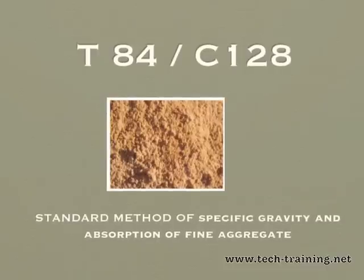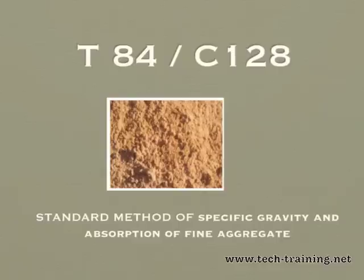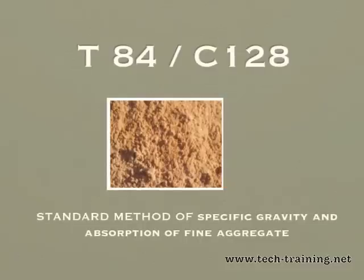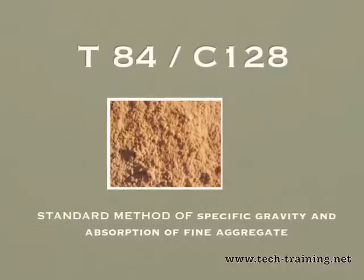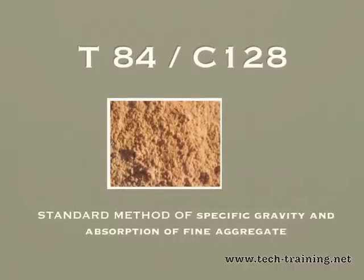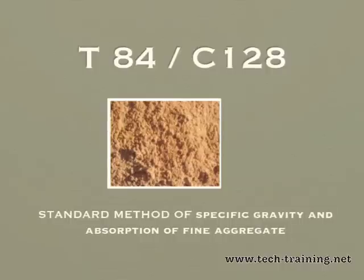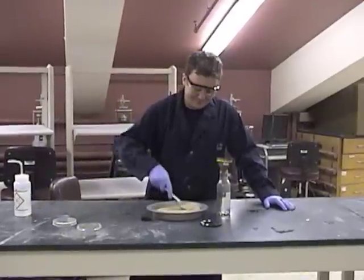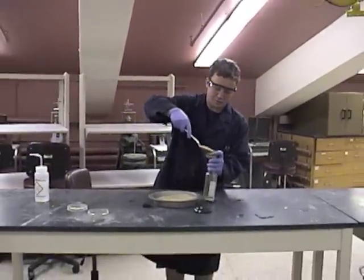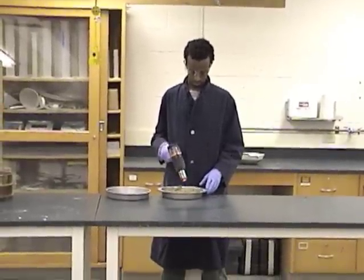AASHTO T84 and ASTM C128 are the standard methods of test for specific gravity and absorption of fine aggregate. The relative density or specific gravity test identifies the physical properties of the fine aggregate — a change in this number will increase or decrease the volume of fine aggregate in a given concrete mixture. Absorption is a measurement of water held in the concrete pores. When the pores are completely filled but there is no surface moisture, the sand is considered to be in the SSD condition. An increase in moisture or decrease in absorption will change the amount of water in a given concrete mixture.